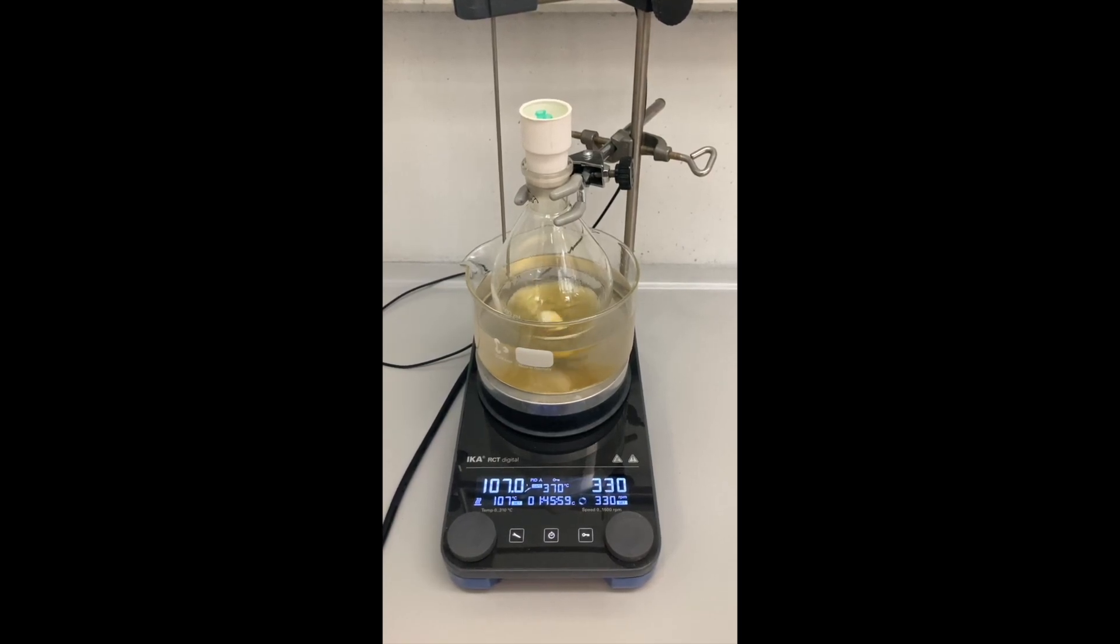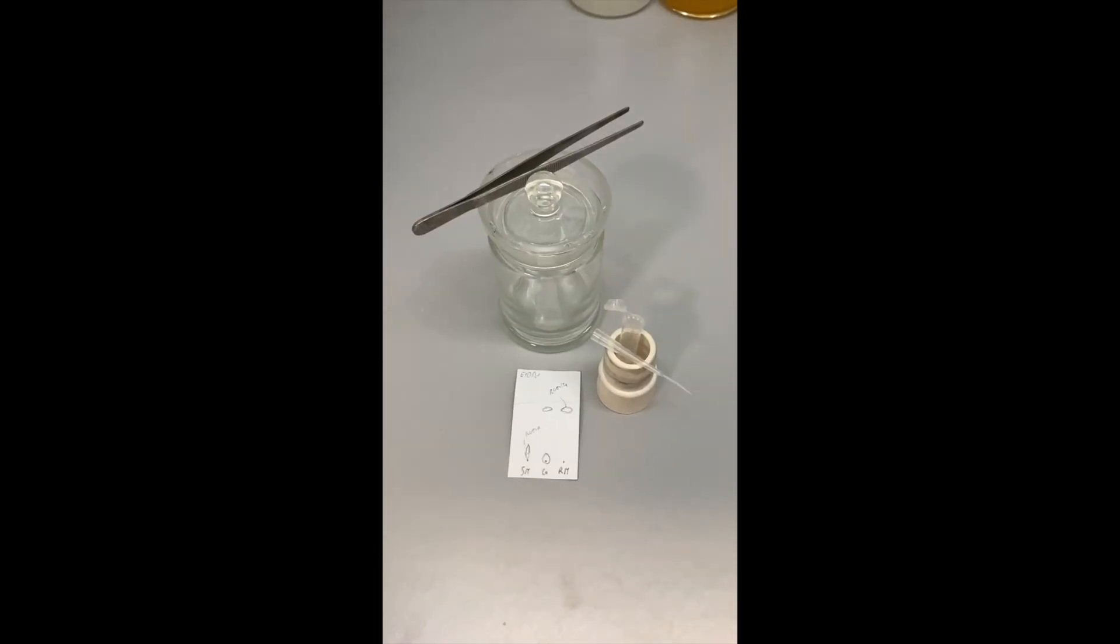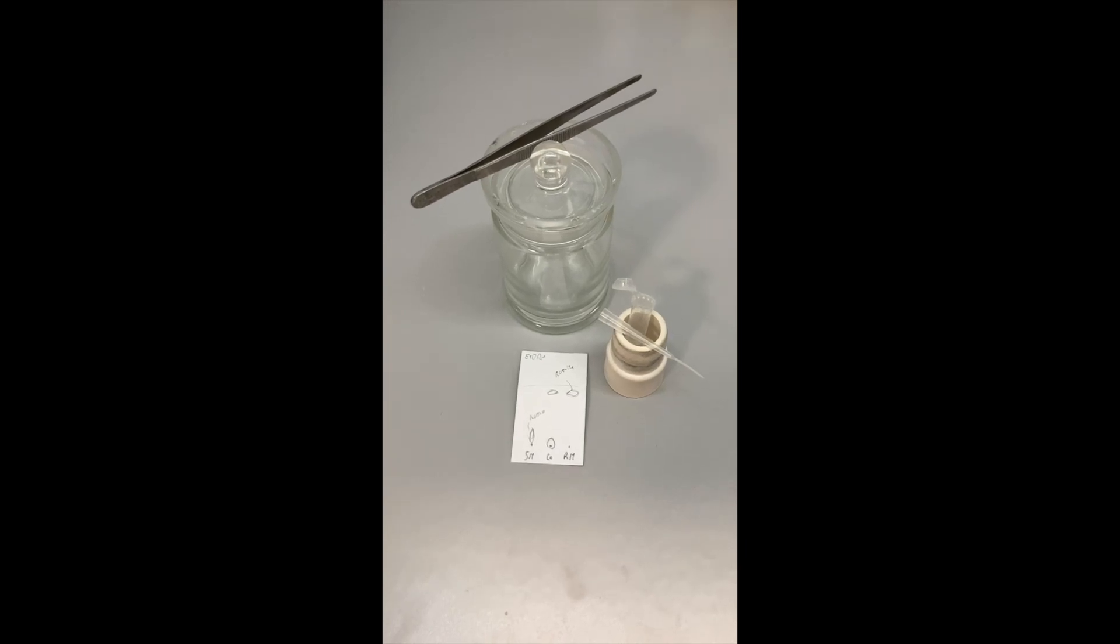One way to monitor the reaction progress is to quench an aliquot of the reaction mixture with methanol, because all the acid chloride will immediately react with it to give the methyl ester. The methyl ester will be very easy to spot on the TLC plate.